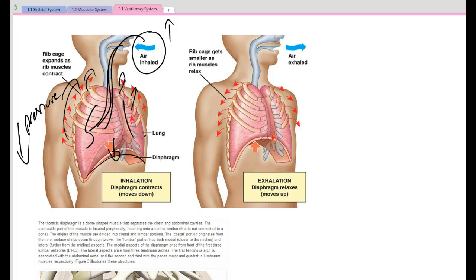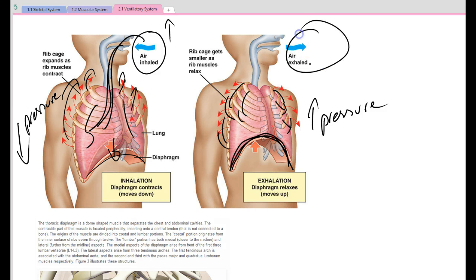When we expire, our diaphragm relaxes and rises. Our rib cage drops. Here we increase the pressure in the thoracic cavity so that it's greater than the pressure in the atmosphere, and the air is breathed out.